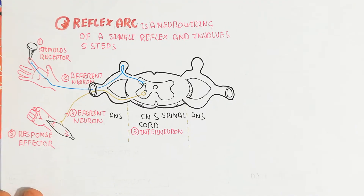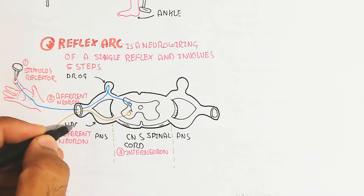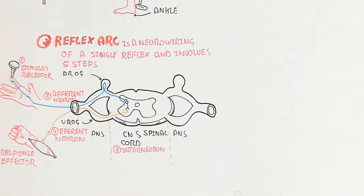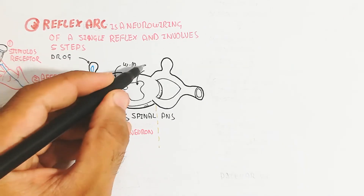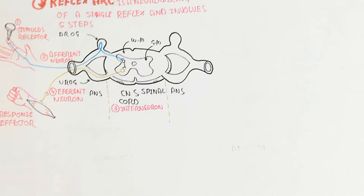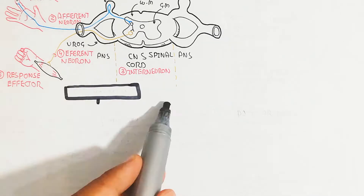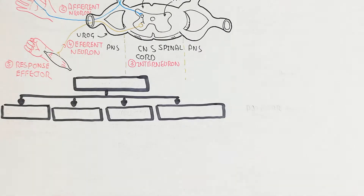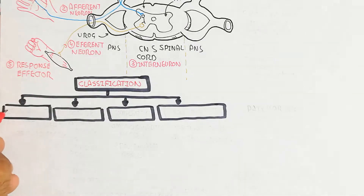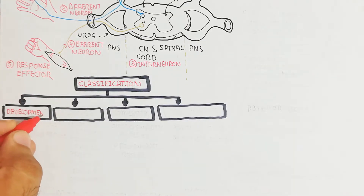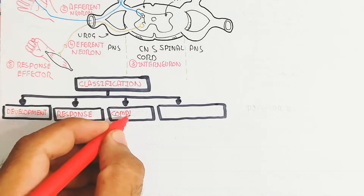The depolarization of the muscle fiber leads to a response — for example, the hand forming a fist from an open position. The dorsal root ganglion, ventral root ganglion, and interneuron are present in the central nervous system, while the peripheral nervous system contains sensory and motor neurons.